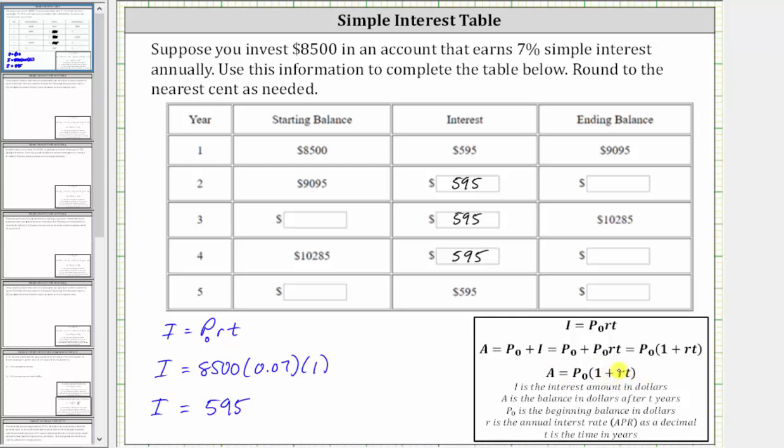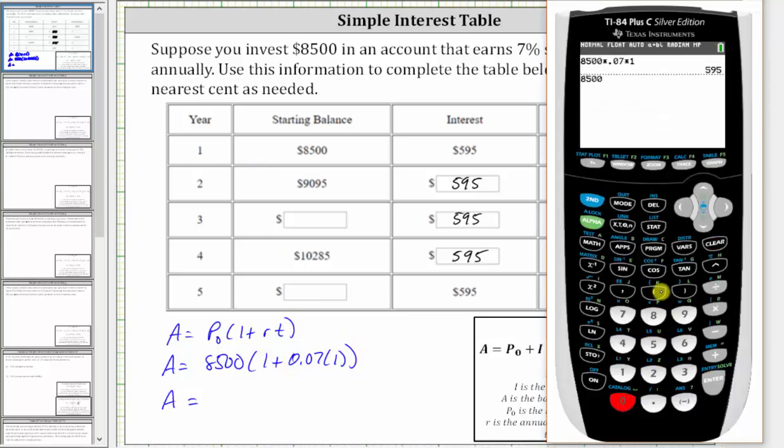Applying this formula, we should get $9,095. We have A equals 8,500 times the quantity one plus R as a decimal is 0.07 times T in years, and therefore T is one. Let's evaluate this on the calculator. We have 8,500, and then in parentheses, one plus 0.07 times one. Enter, and notice how we do get 9,095.